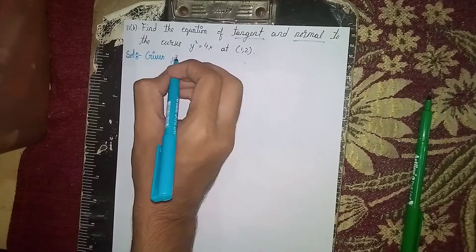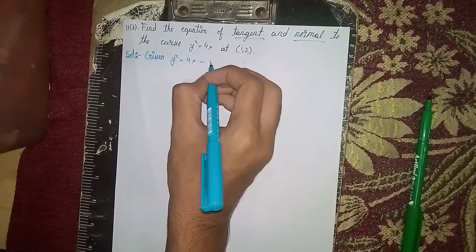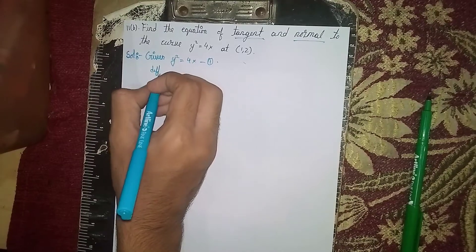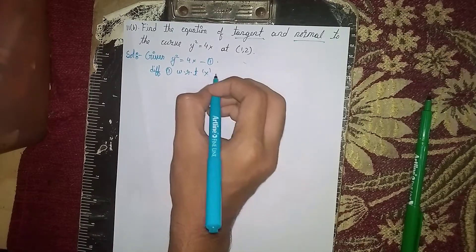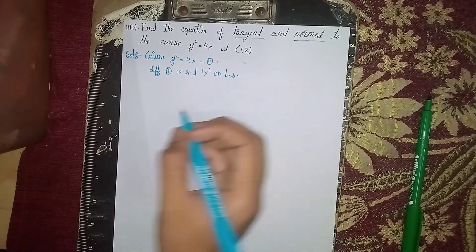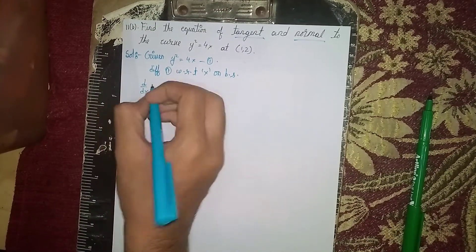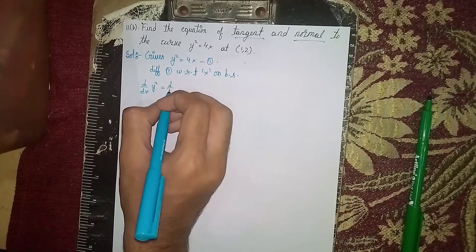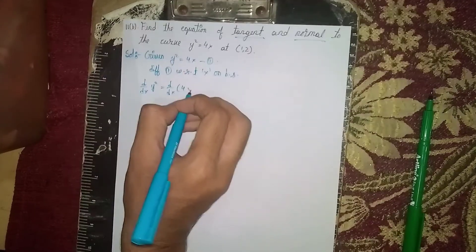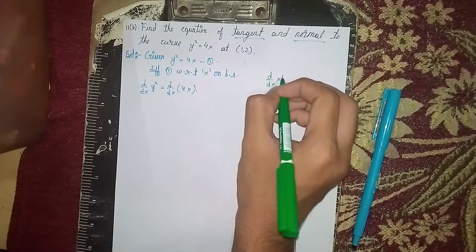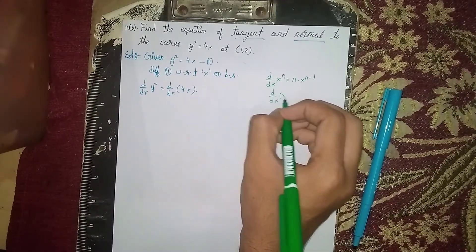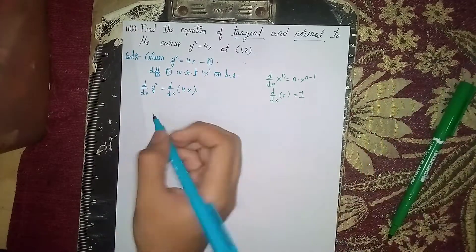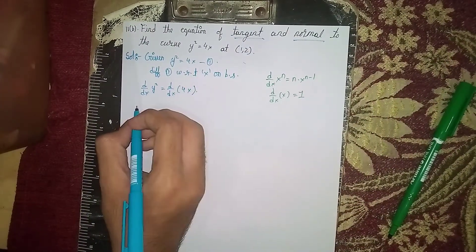Given: y squared equals 4x — take this as equation 1. Differentiate equation 1 with respect to x on both sides. We use the formulas: d/dx of x^n equals n times x^(n-1), and d/dx of x equals 1.